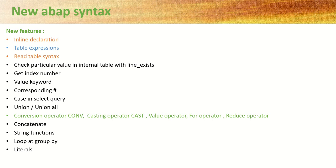The new features introduced by SAP in ABAP 7.4 and 7.5 include: inline declaration — a new way of declaring internal tables, work areas, and variables at the same position where they are used. Along with inline declaration, there are many other features like table expressions, read table syntax, checking a particular value in an internal table, and getting the index number. There are also different operators such as conversion operators, casting operators, value operators, and corresponding operators, plus changes in the SELECT query including UNION and UNION ALL.